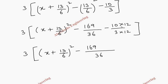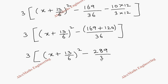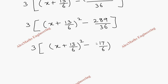Both terms are negative, so combining: 169 + 120 (since 10×12 = 120), giving 3 times (x + 13/6)² minus 289/36. This is of the form x² minus a², so we have (x + 13/6)² minus (17/6)².